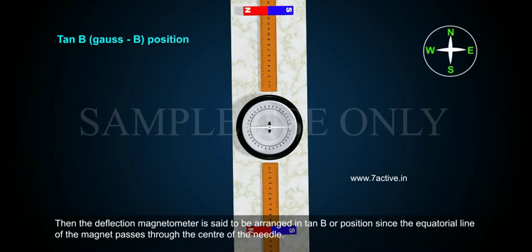Then the deflection magnetometer is said to be arranged in Tan B position since the equatorial line of the magnet passes through the center of the needle.